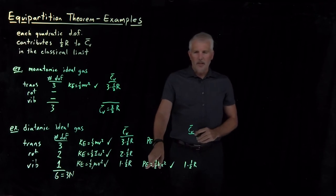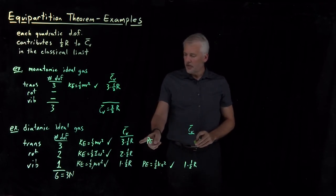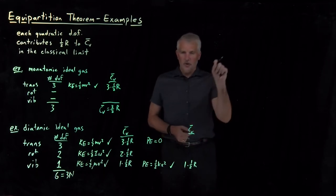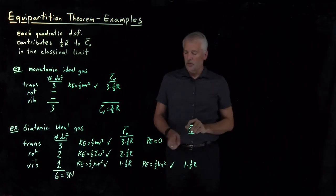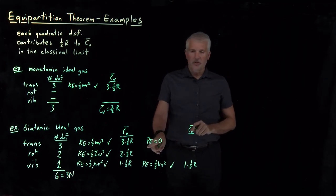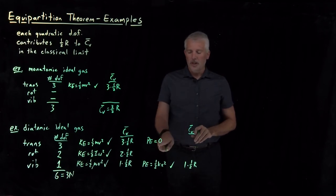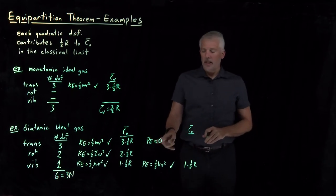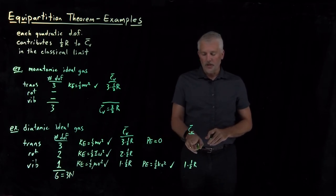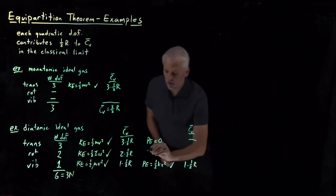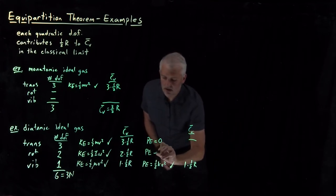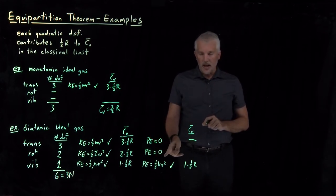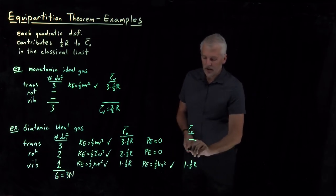We should also consider the potential energy contributions of translations and rotations. However, if a molecule is translating around in a room, its x, y, z positions don't affect the molecule's potential energy — so the translational contribution to potential energy is zero, not a quadratic degree of freedom. Likewise, if a molecule rotates, it doesn't change its potential energy, so rotations also don't contribute to the heat capacity through potential energy.